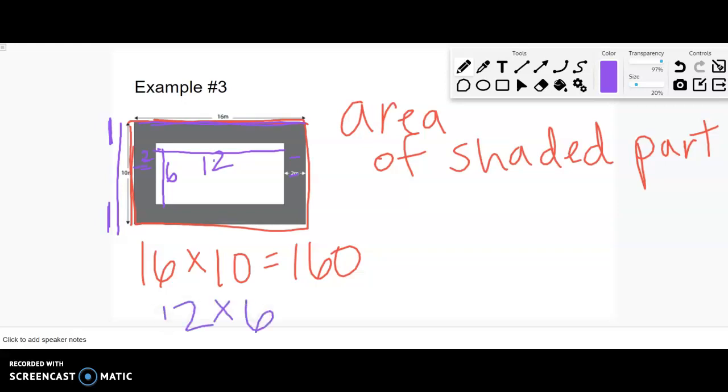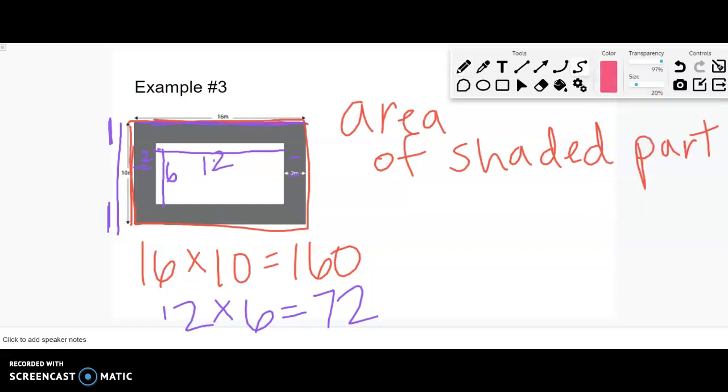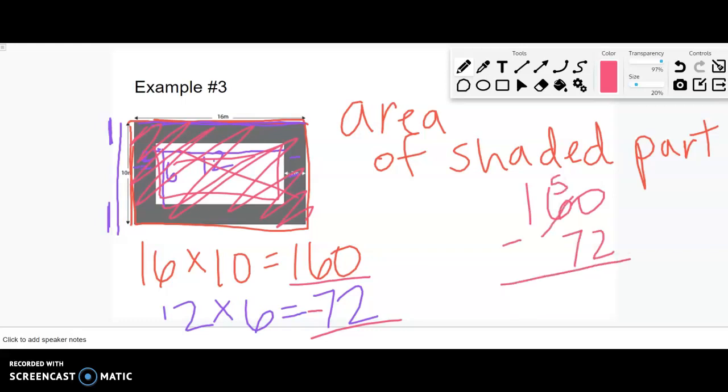Now I want to take that whole pink rectangle and take away that middle part - cut it out and get rid of it. So I'm taking 160 and subtracting 72. Let me use my calculator: 10 minus 2 is 8, 15 minus 7 is 8. Lots of 8s in this one, so 88 square meters.